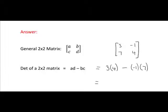So 3 multiplied by 4 will give us 12, minus 1 by 7 gives us minus 7, but it is a minus minus 7, which will give us plus 7. And to finish it out, 12 plus 7 is equal to 19.